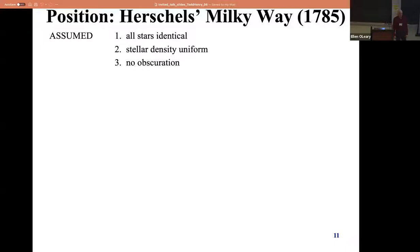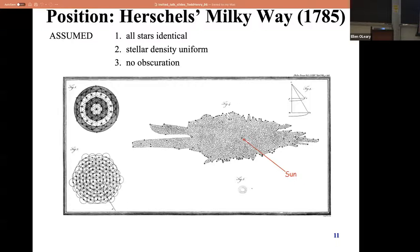Making some assumptions - which are terrible assumptions today but not so bad for 200 or so years ago - they came up with a model of the galaxy that looks like a microbe crawling on your skin. This is the shape of the galaxy they came up with. Is it anywhere close to correct? They got some things right, just using positions of stars in the sky and counting.